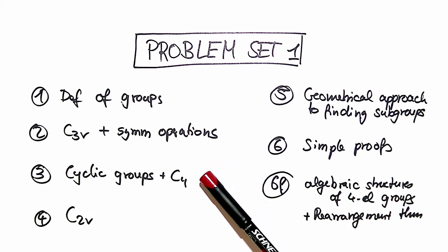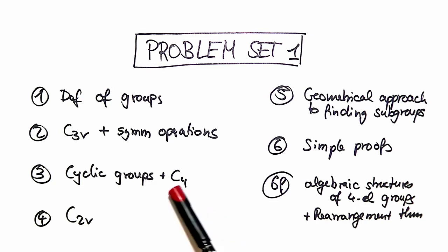In examples three and four we look at cyclic groups, specifically at the C4 group, and in problem four we look at the C2V group. I go a little quicker here.